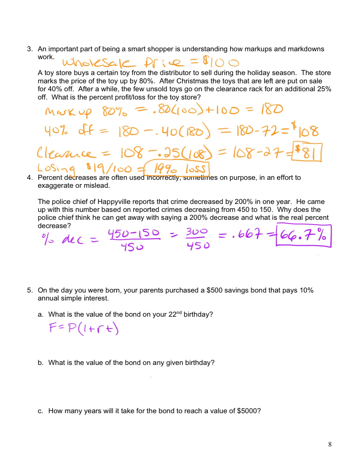So we're trying to figure out the future value 22 years from now. So F is what I don't know. Leave it as an F. Present value is $500. It was $500 the day you were born. One plus the interest rate is 10%, so I'm going to put in a 0.1 for R. And then time is going to be 22 years, 22 years from the day you were born.